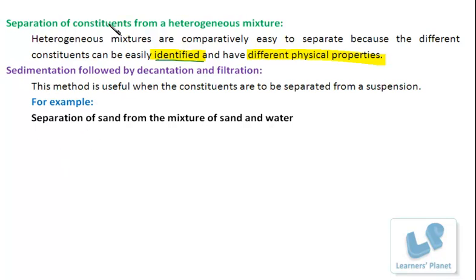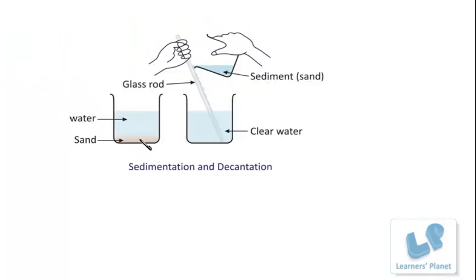The first method is sedimentation followed by decantation and filtration. The mixture is first allowed to settle down — that is sedimentation — then it is decanted and then filtered. For example, in separating sand from water, the mixture is allowed to stand. Sand being heavier settles down at the bottom, then the mixture is slowly decanted. You must have seen this at home — washing of pulses, wheat, or rice before cooking involves this same process of sedimentation and decantation.